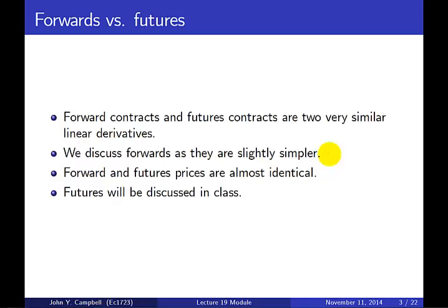Forward and futures prices are almost identical and for the purpose of this class we will treat them as identical. The difference has to do with payments that may need to be made along the way during the life of the contract. Forward contracts make payments only at the end, while futures contracts make payments on a daily basis.